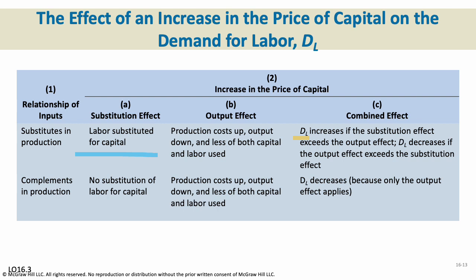With complements in production: if capital goods get more expensive and they complement workers, you can't substitute them. Think of high-tech manufacturing where machinery performs tasks people can't do by hand — workers and machines are complements. In that case, you can't substitute capital goods for workers the way you could with, say, stitching t-shirts. Production costs go up, output goes down, and less of both are used. Demand for labor generally decreases because only the output effect applies — if we have less machinery, we'll need fewer workers to operate it.